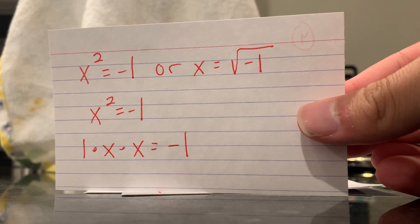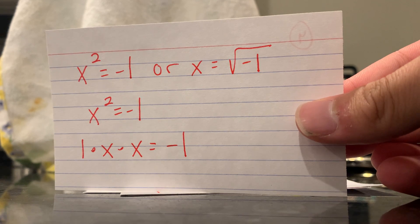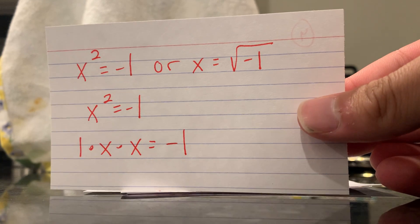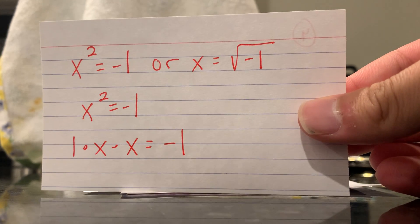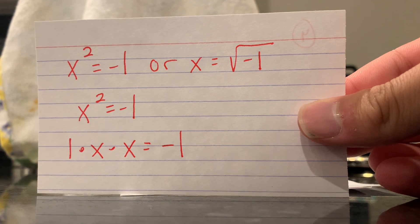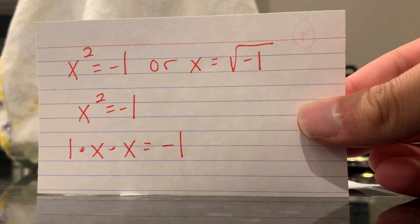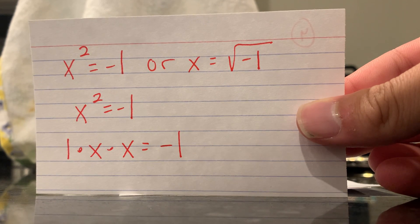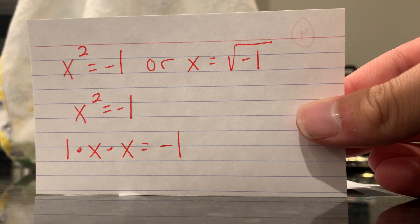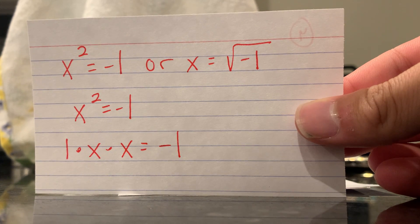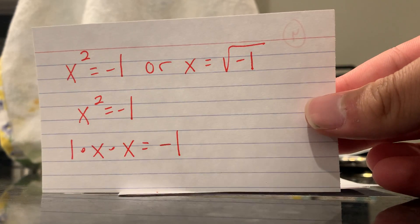Now think about x squared equals negative one, which is really one times x times x equals negative one. What transformation of x, when applied twice, turns one into negative one? Well, we can't multiply by a positive twice because the result stays positive. And we can't multiply by a negative twice because that result will flip back to positive on the second multiplication.